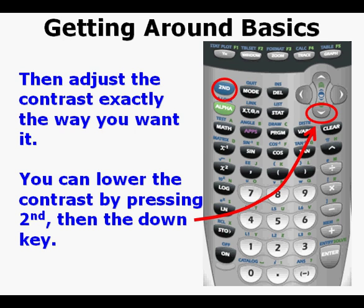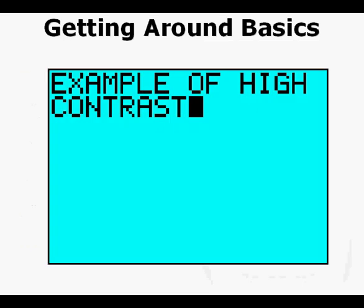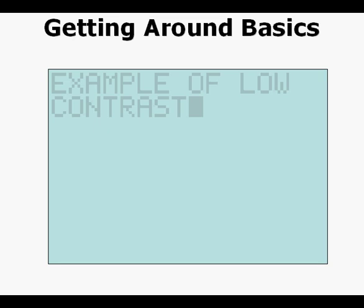You can lower the contrast by pressing second, then the down arrow key and repeat the process. This view screen is an example of normal contrast.